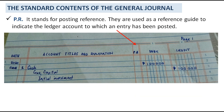Another content is the PR, which stands for posting reference. They are used as a reference guide to indicate the ledger account to which an entry has been posted. For this step in the accounting cycle, we leave the PR column empty. We will fill this column only when we reach the third step in the accounting cycle — posting to the ledger.